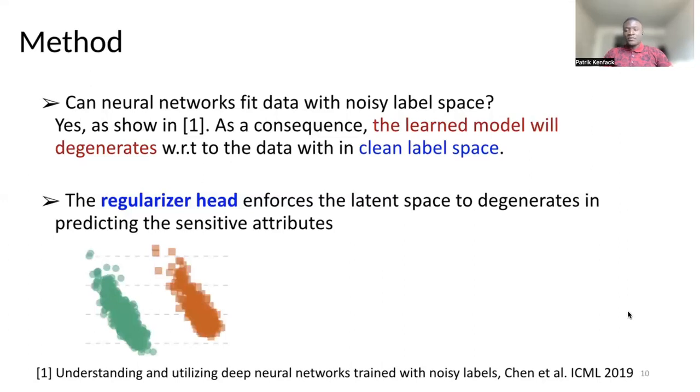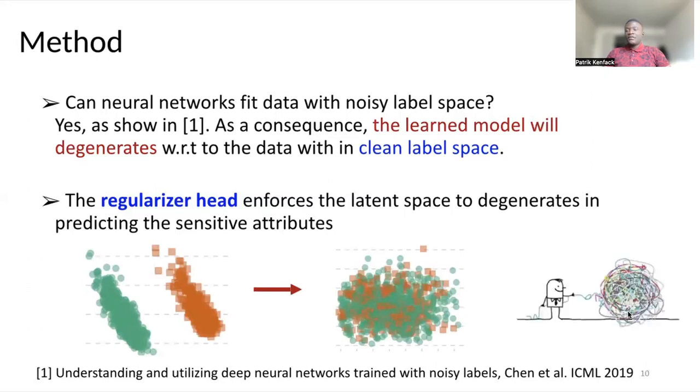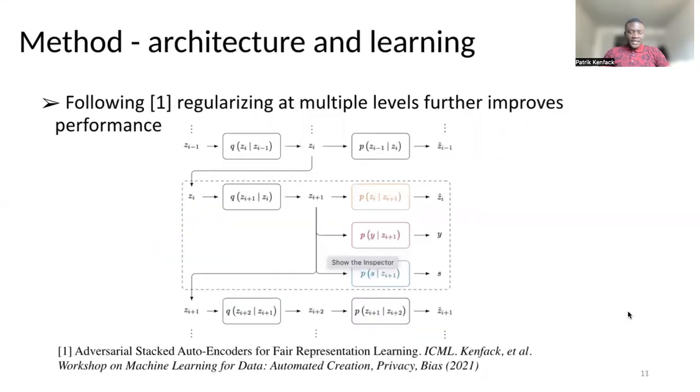Basically, if we have a model where we want to predict on the clean label space, it will create the separation between the two classes in this case. But by training on the noisy label space, we notice that in the latent space, everything is entangled. Training on noisy label space enforces the entanglement of the representations when it comes to this sensitive attribute. We also show that if we regularize at multiple levels, we can even improve the performances further. Here, the intuition is that different layers of the neural network can encode different information. Therefore, if we regularize these levels in a hierarchical fashion, we show that this further improves the performances.